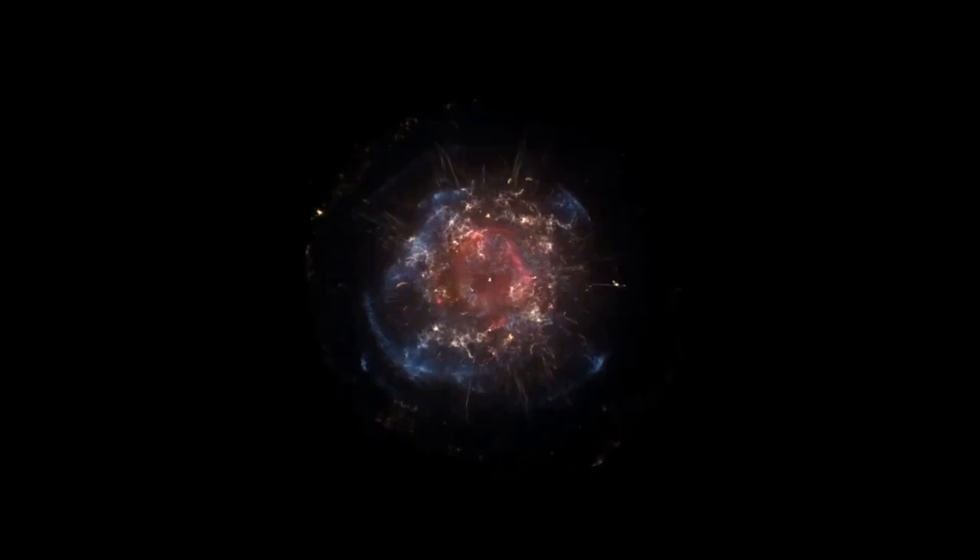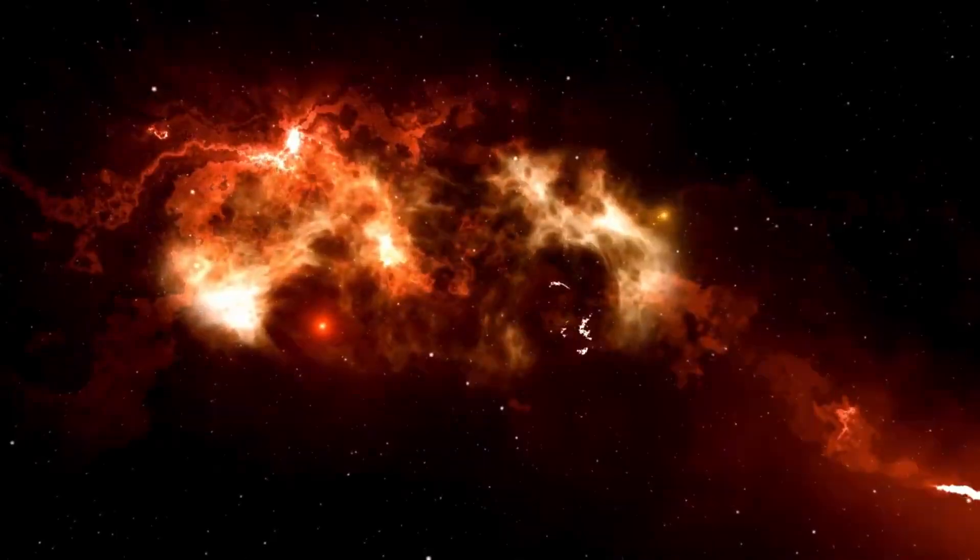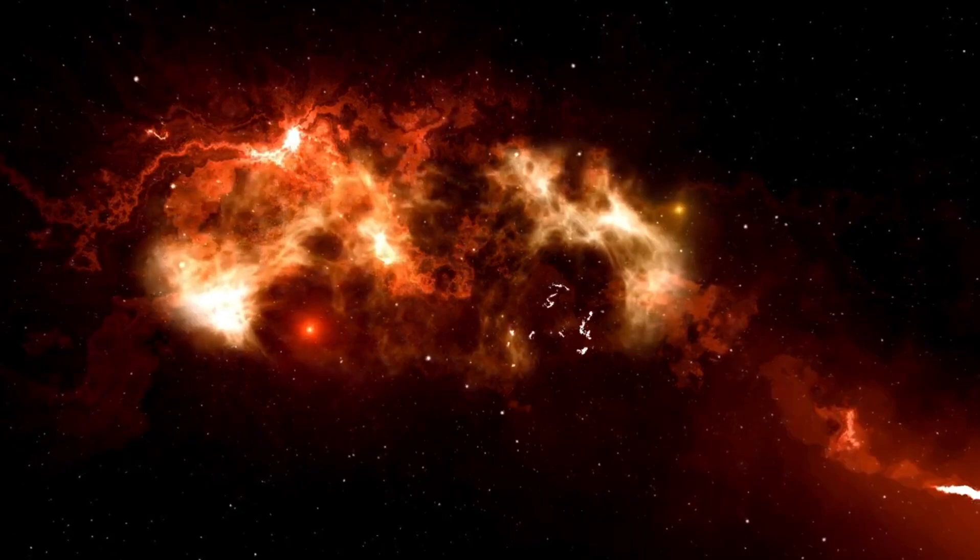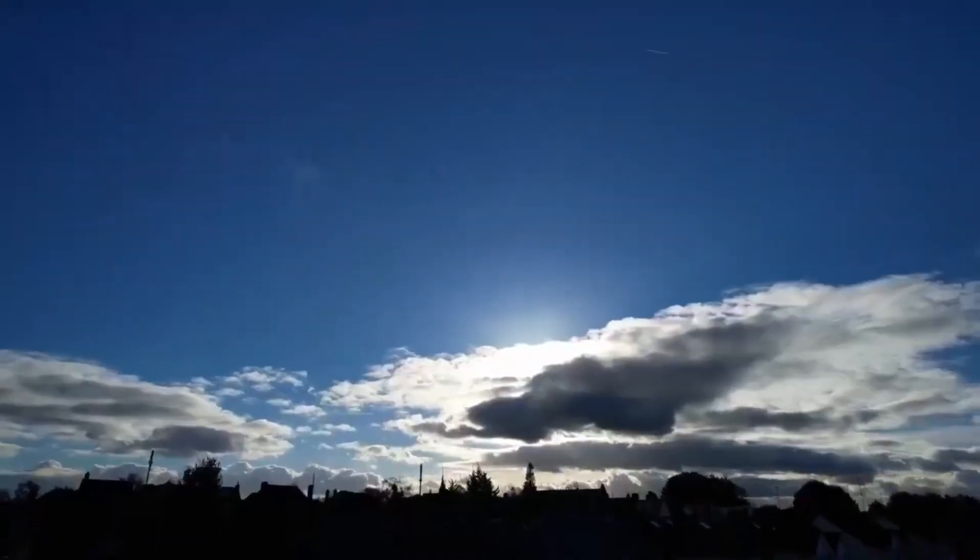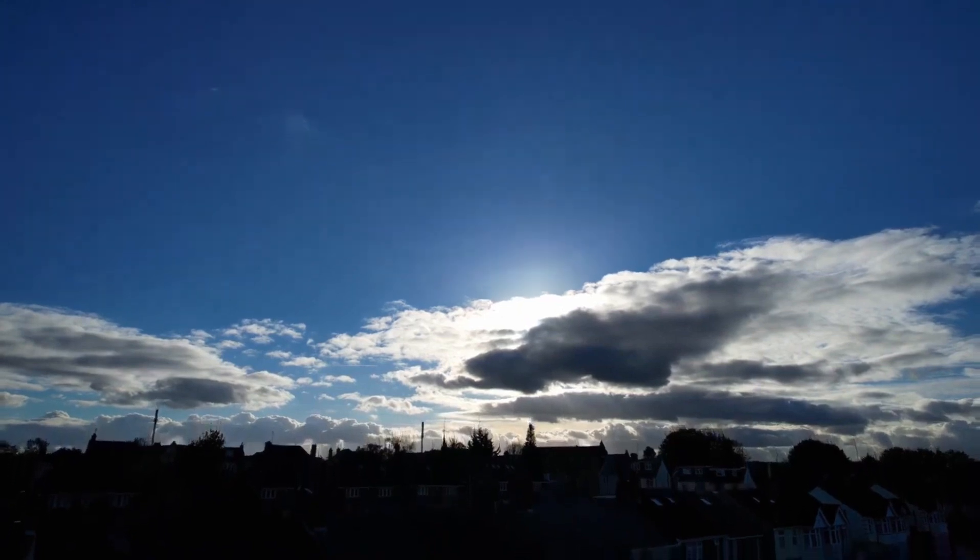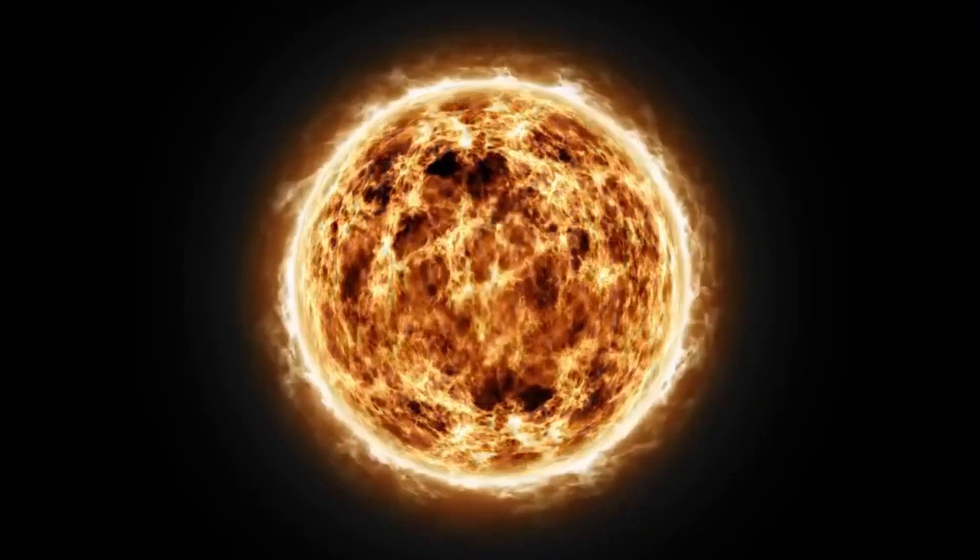Betelgeuse, often referred to as the shoulder of Orion, is one of the brightest stars in the night sky and one of the largest stars known to humanity. If placed at the center of our solar system, its surface would extend beyond the orbit of Mars, engulfing the inner planets in its fiery embrace. This massive star, located approximately 650 light-years from Earth, is a semi-regular variable star, meaning its brightness fluctuates over time.